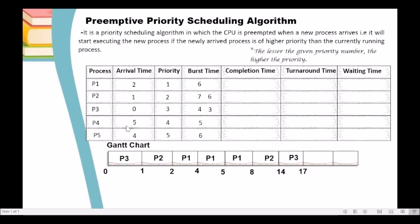The next in priority is P4. P4 will execute for 5 units of time, so we add 5 to 17 — P4 completes at time 22. Finally, the last in priority is P5 with priority 5. We allocate the CPU to P5 and it executes for 6 units. Adding 6 to 22, P5 completes at time 28.